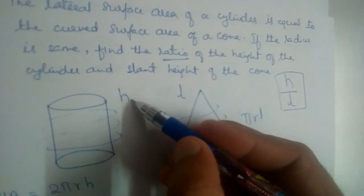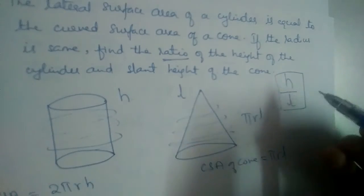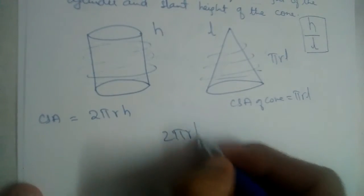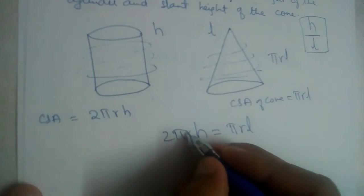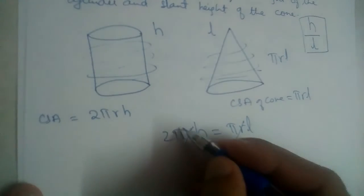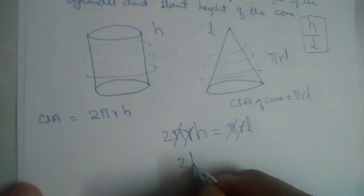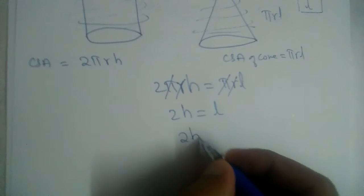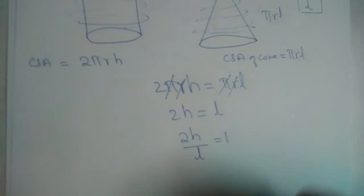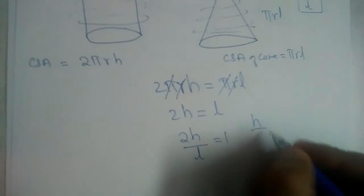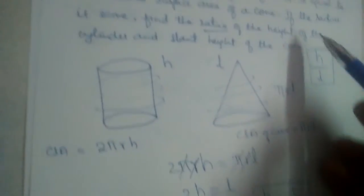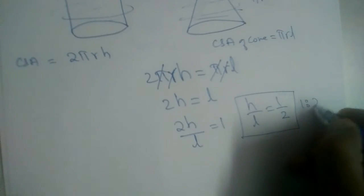We need to find the ratio h by l, not the individual values. Since 2πrh = πrl and the radii are equal, π and r cancel, giving us 2h = l. So h by l becomes 1 by 2. The ratio of the height of the cylinder to the slant height of the cone is 1 : 2.